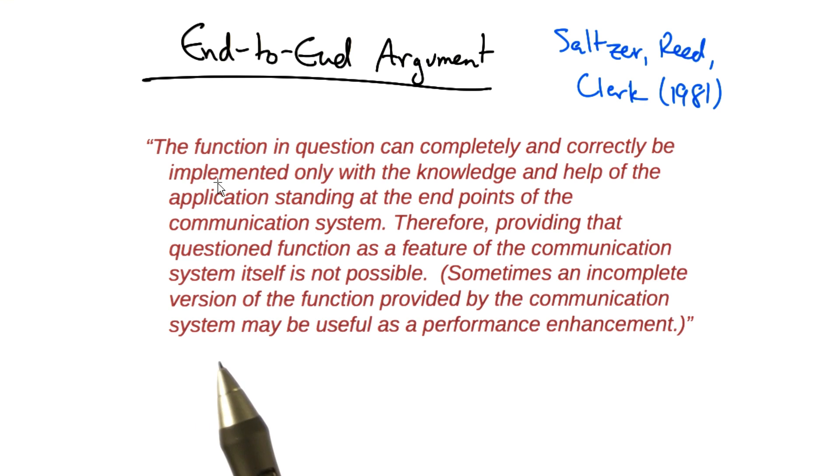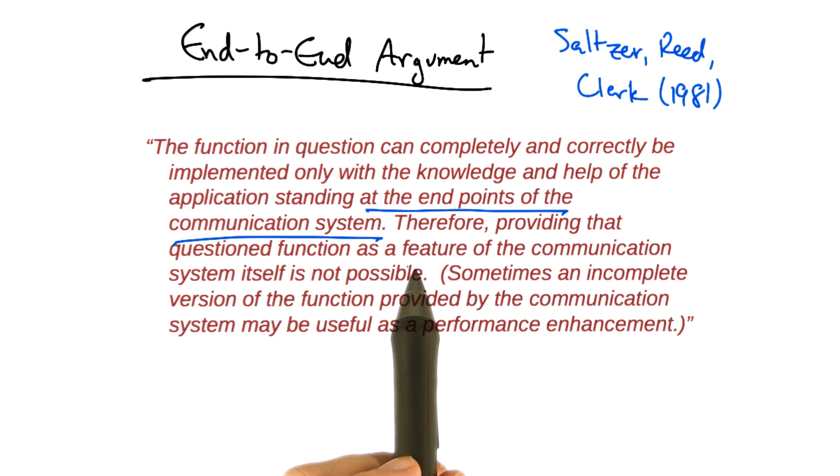In a nutshell, the end-to-end argument reads as follows. The function in question can completely and correctly be implemented only with the knowledge and application standing at the endpoints of the communication system. Therefore, providing that questioned function as a feature of the communication system itself is not possible.